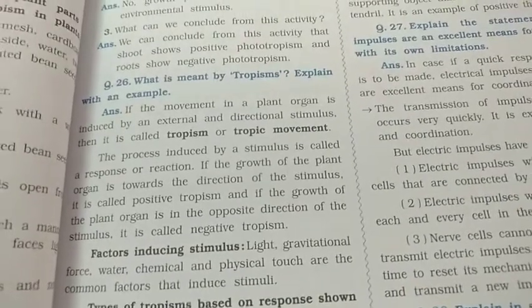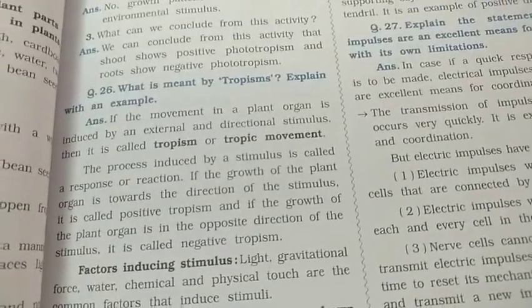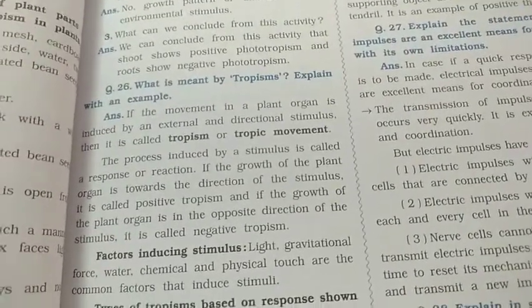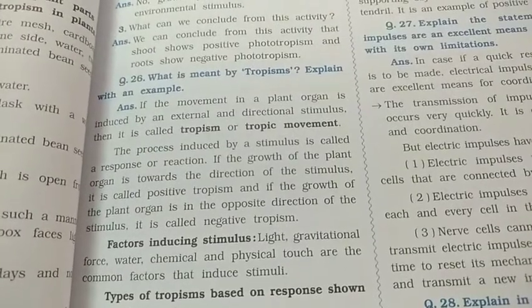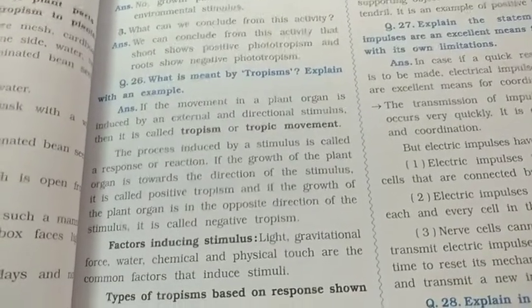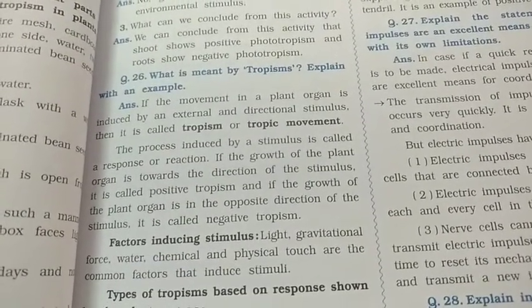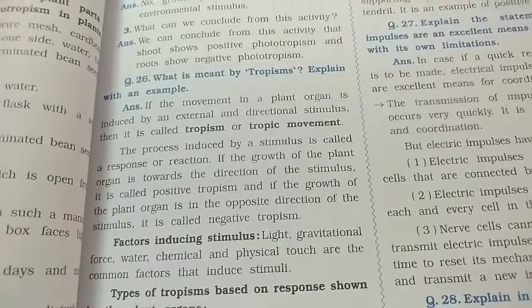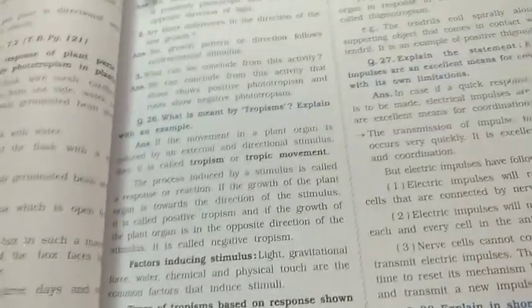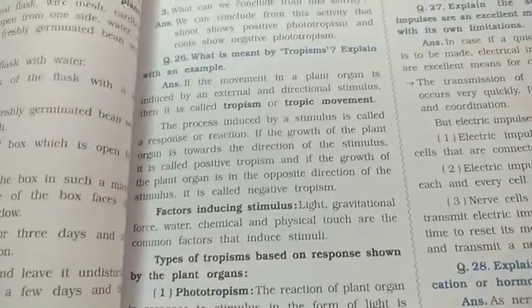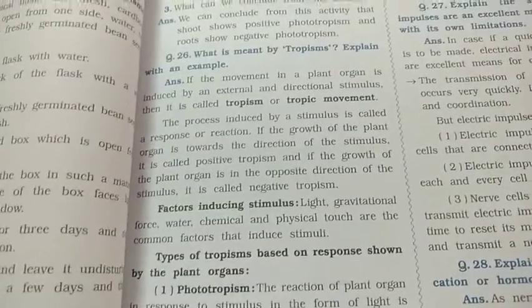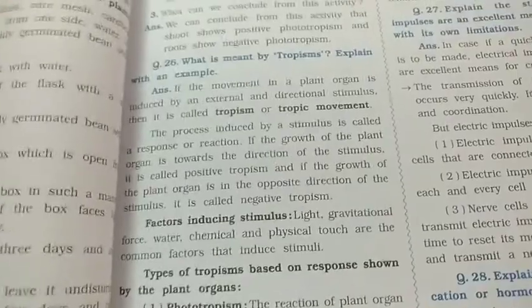The factors that induce a stimulus are: first, light; second, gravity or gravitational force; third, water; and then chemical and physical factors. Based on these different factors, tropism has different parts which we will study one by one.